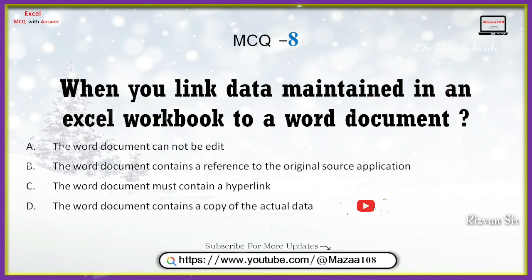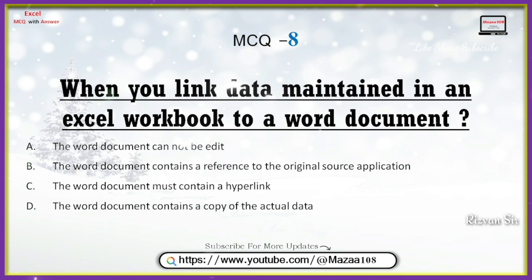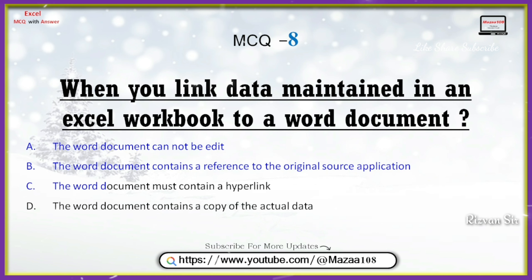When you link data maintained in an Excel workbook to a Word document, the options are: option A, the Word document cannot be edited; option B, the Word document contains a reference to an original source application; option C, the Word document must contain a hyperlink; and option D, the Word document contains the copy of actual data.